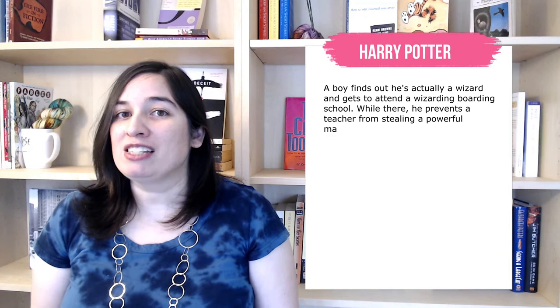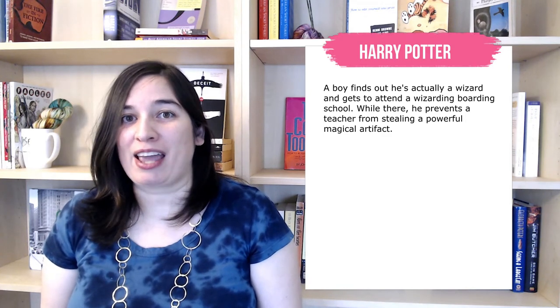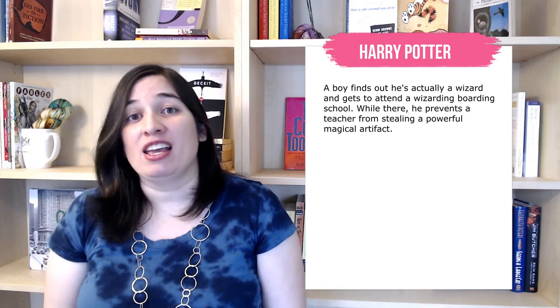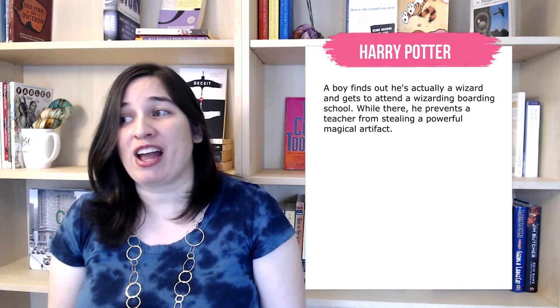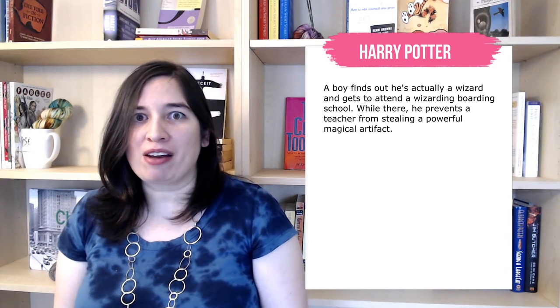Step four is where we take the what if and expand it into a story with a beginning and an end. In the Harry Potter example, I would expand it to: a boy finds out he's actually a wizard and gets to attend a wizarding boarding school. While there, he prevents a teacher from stealing a powerful magical artifact. Now I have a lot more to go on — that is actually a story. It has a beginning and end, two characters, the boy and the teacher, and a bunch of implied characters and settings in terms of the school. So I have enough to start noodling about it and getting excited — but do I really have enough to assess the project fairly, and to understand how satisfying an experience this story is going to give to the reader? Not quite.